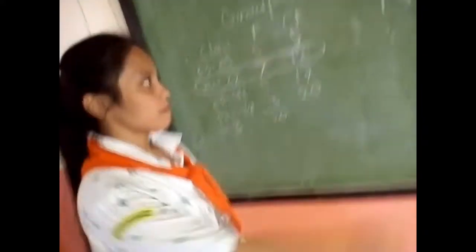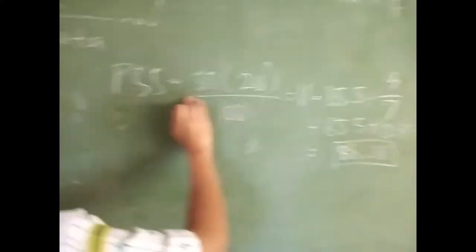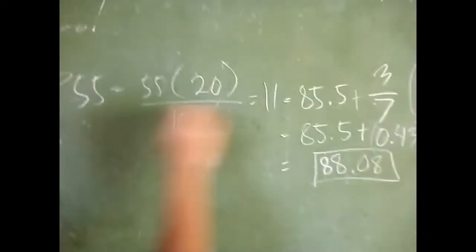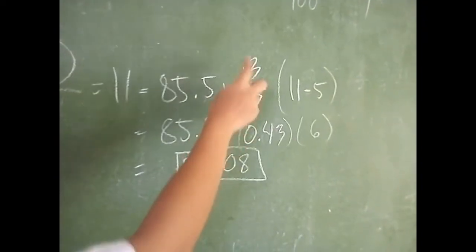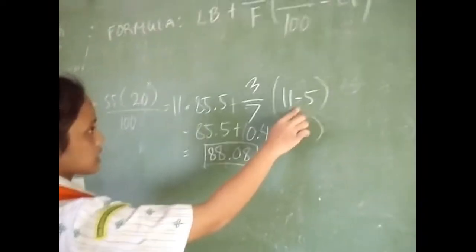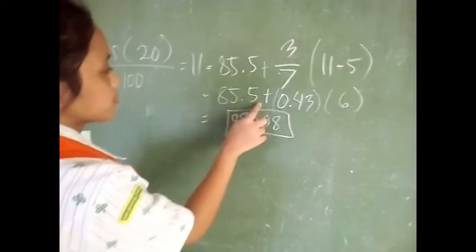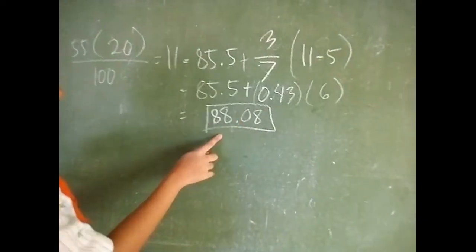For the next example, we have P25. First find K times N divided by 100: 25 times 20 divided by 100 equals 11. The closest CF would be 12. So the lower boundary is 85.5, plus 3 divided by 7, the class frequency, times 11 minus 5. So it would be 85.5 plus 0.4 times 6. The answer would be 88.0.